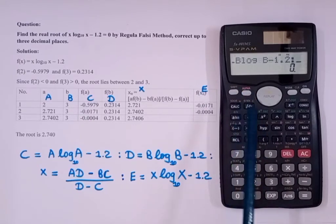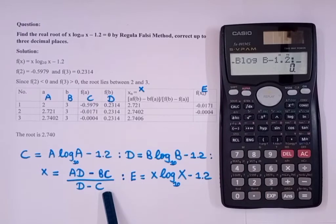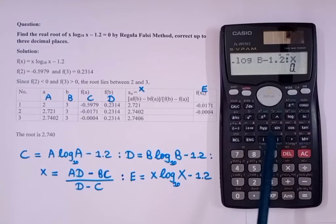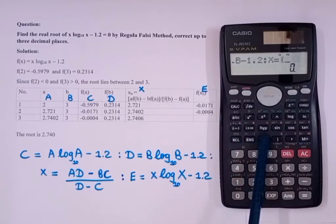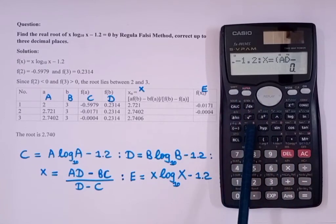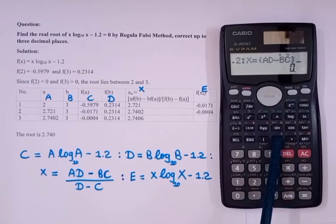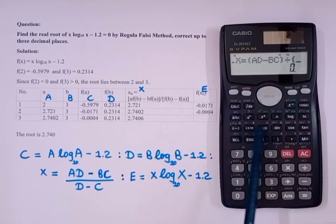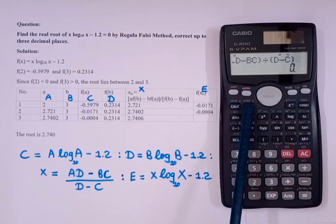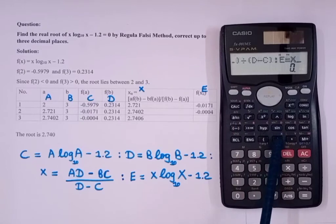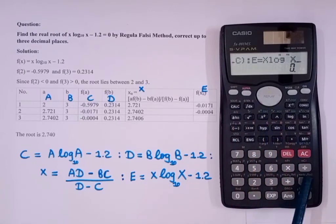Again press alpha and colon. Then you will have to write this: X equals AD minus BC divided by D minus C. So for that, again alpha, and we will write X alpha equals. Then keep a bracket: alpha A alpha D minus alpha B alpha C, close the bracket, divided, alpha, again bracket, alpha D minus alpha C, and bracket close. Then alpha colon.